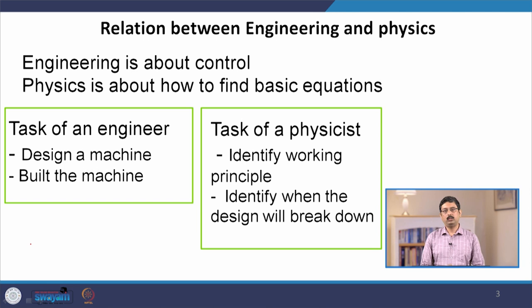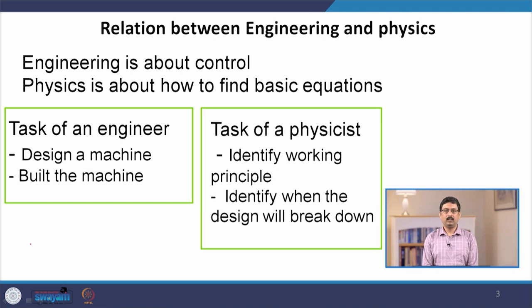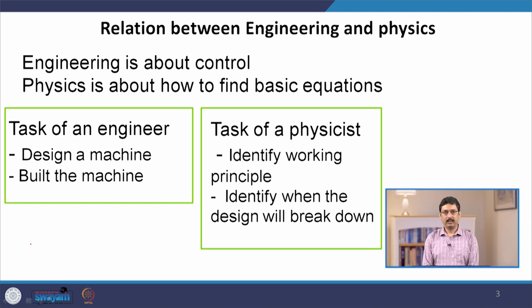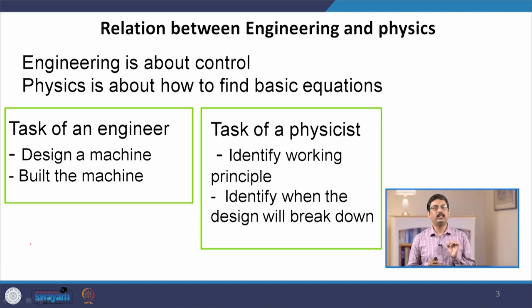Engineering is about control — you want to design some machine which you can control to get an output in a controlled way. Whereas the emphasis of physics is on how to find the basic principles or basic equations to analyze the machine. The task of an engineer could be to design a machine and build it in real life, whereas the task of a physicist could be to identify the working principle that explains how the machine works, and also to identify the conditions when the design will break down.